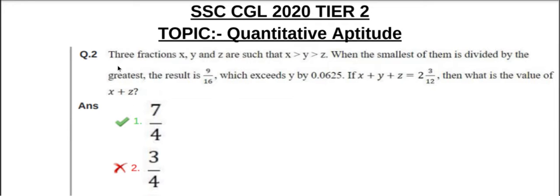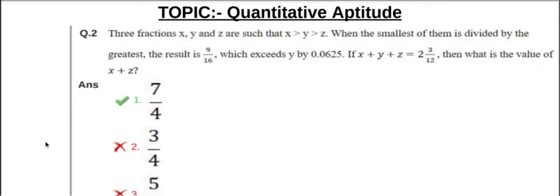Question number 2. Three fractions x, y and z are such that x greater than y greater than z. When the smallest of them is divided by the greatest, the result is 9 by 16, which exceeds y by 0.0625. If x plus y plus z equals 2 whole 3 by 12, then what is the value of x plus z?